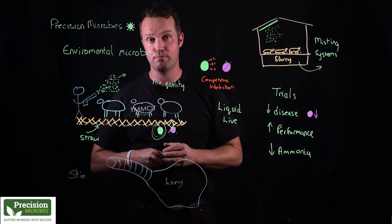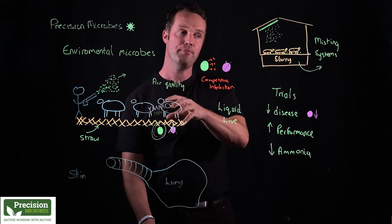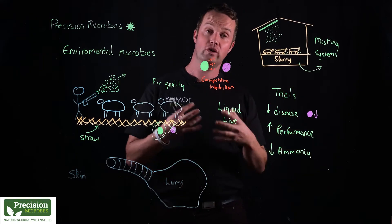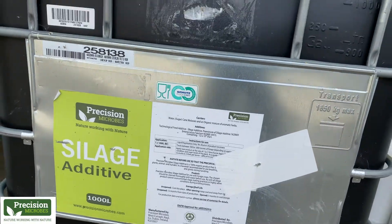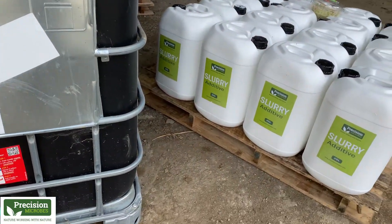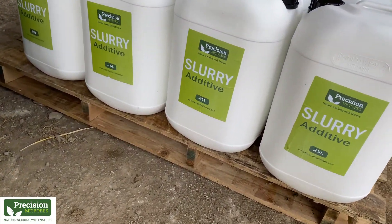Again, the same principles apply. With slurry or effluent, we're using our microbes to control the composting effect. What we're seeing in the trials is if we can control the pathogens in the environment of animals, we're reducing infection pressure and risk of disease, and we're seeing better performance.